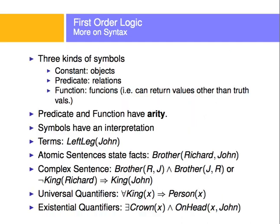We're going to have constants, which are the objects — John, Bobby the dog, etc. We'll have predicates, which are relations for the most part. And we'll have functions, which actually return a value that is not true or false. For example, 'Brother(Richard, John)' — Richard is the brother of John. This is how we read it: this object is in this relation with the second object. That's an atomic sentence and I'm stating a fact, which has a true or false value.